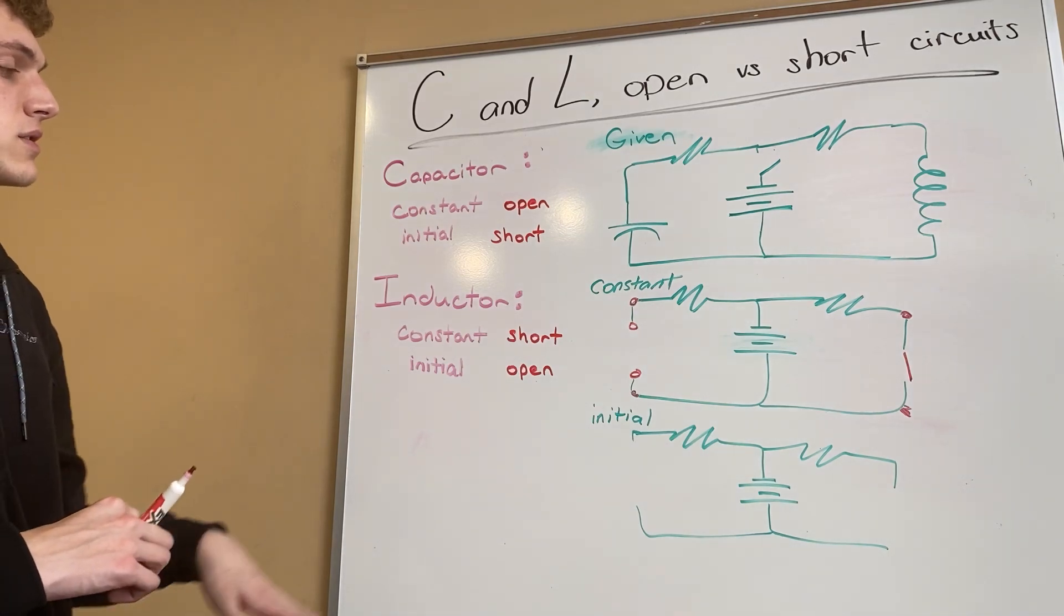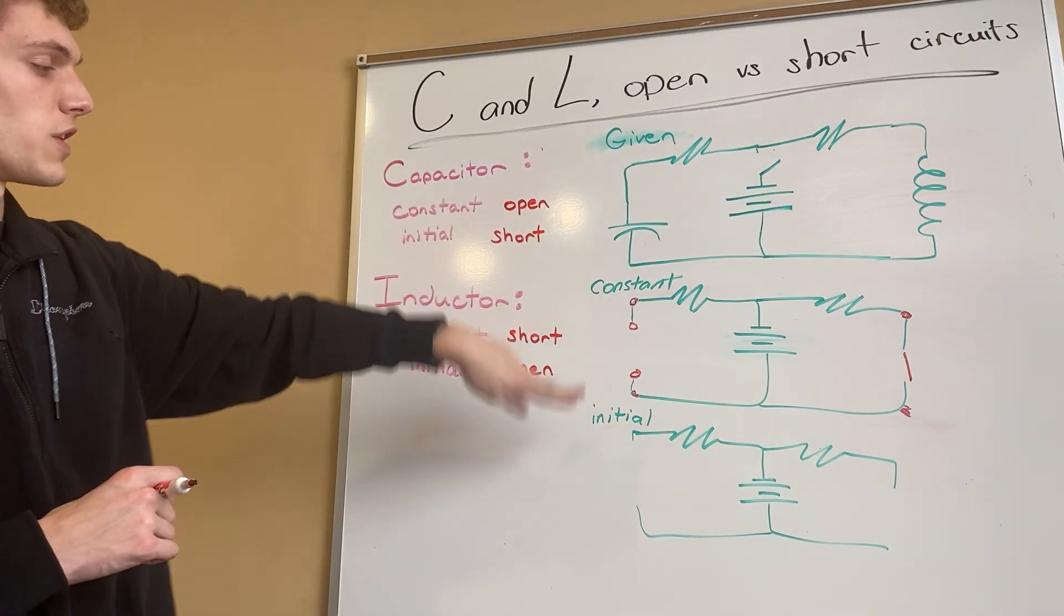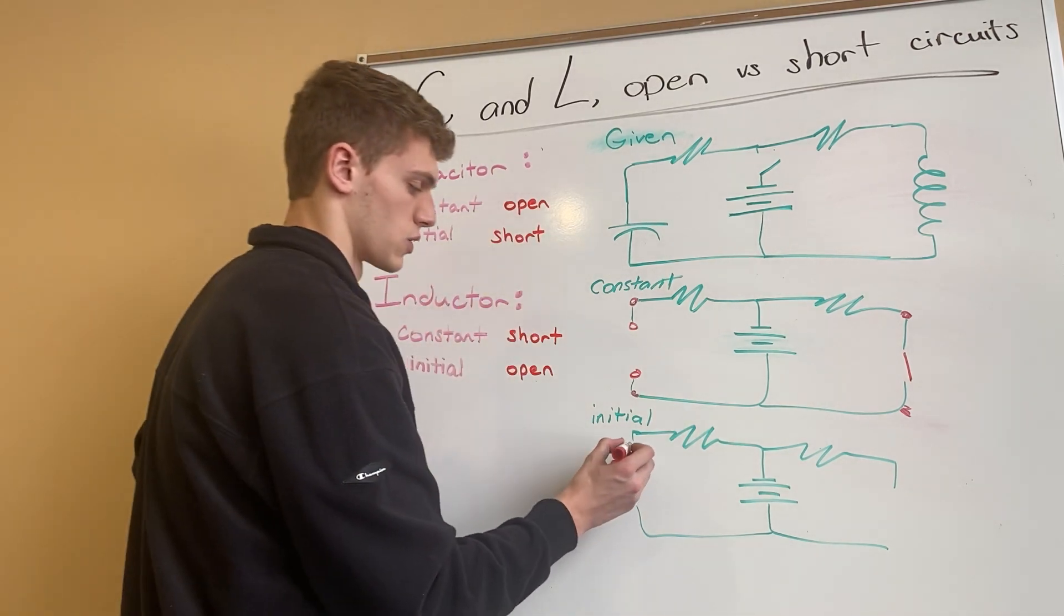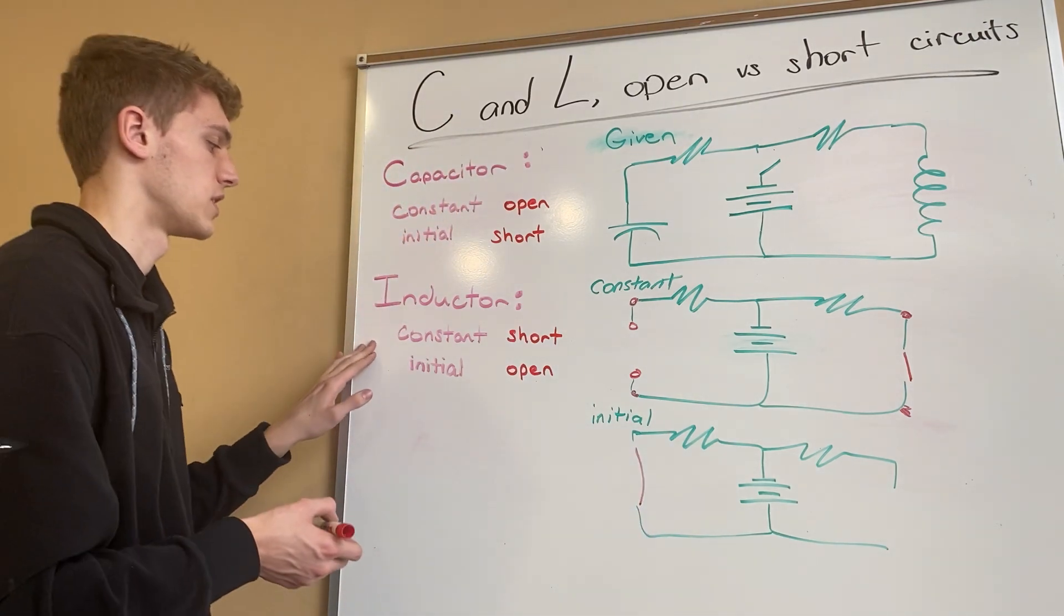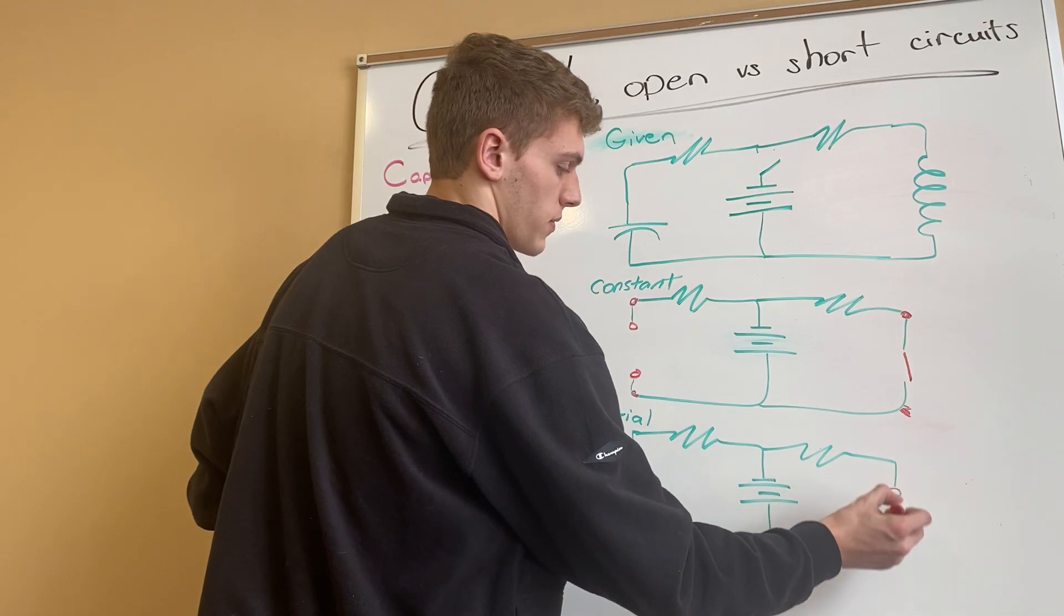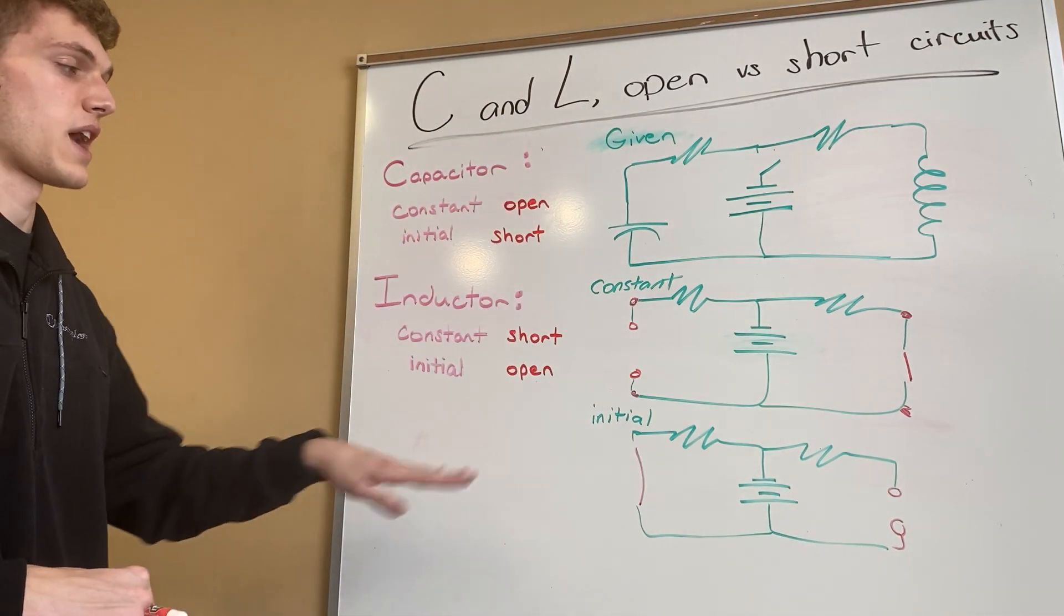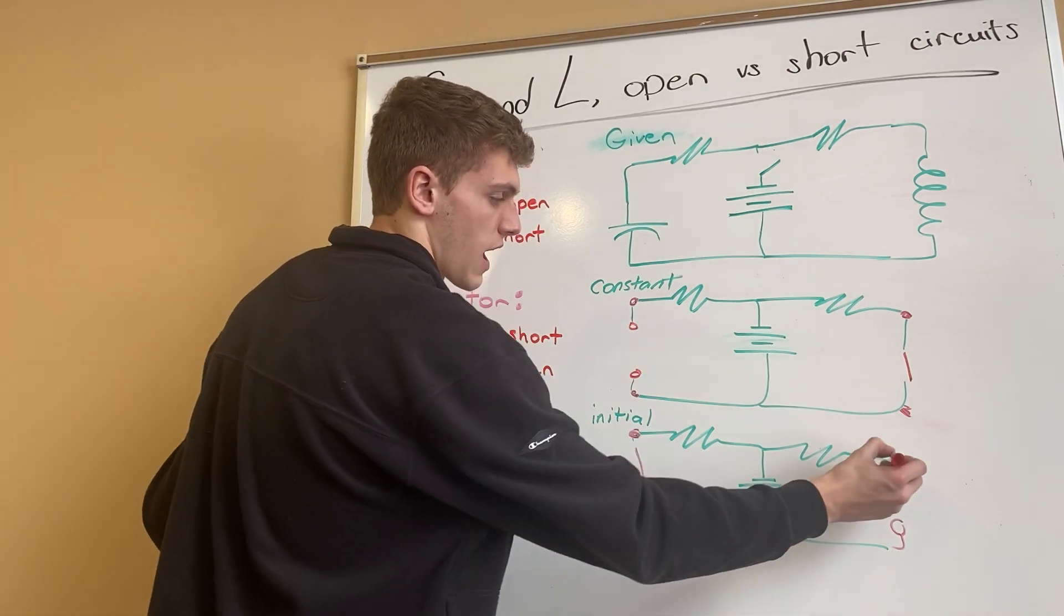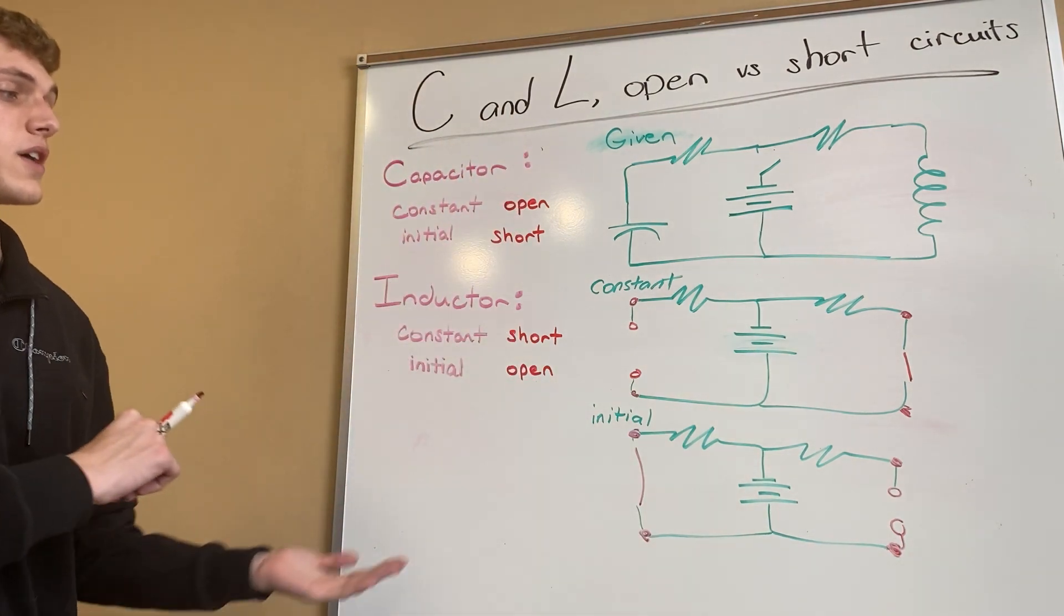Same can be said for the initial. If we said that capacitors, which would be on this side, after they have been initially opened they act as a short, and inductors after they've been initially opened they act as an open, then we can use if we have a more complicated circuit once again to find any of the current or voltage at any of the nodes.